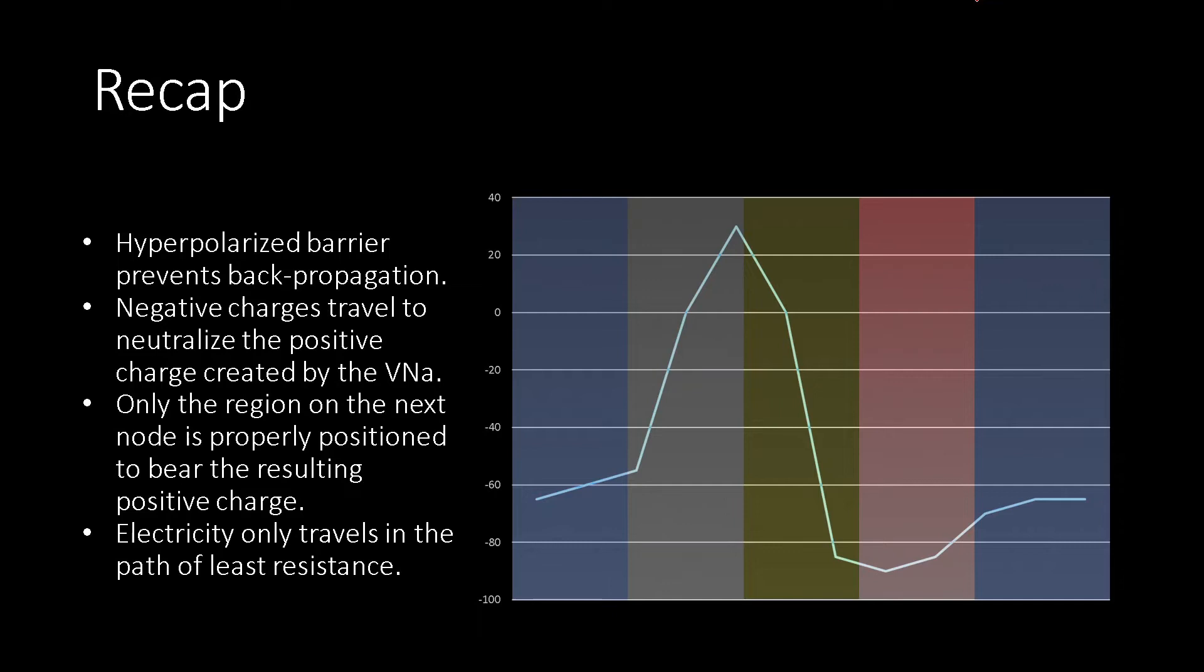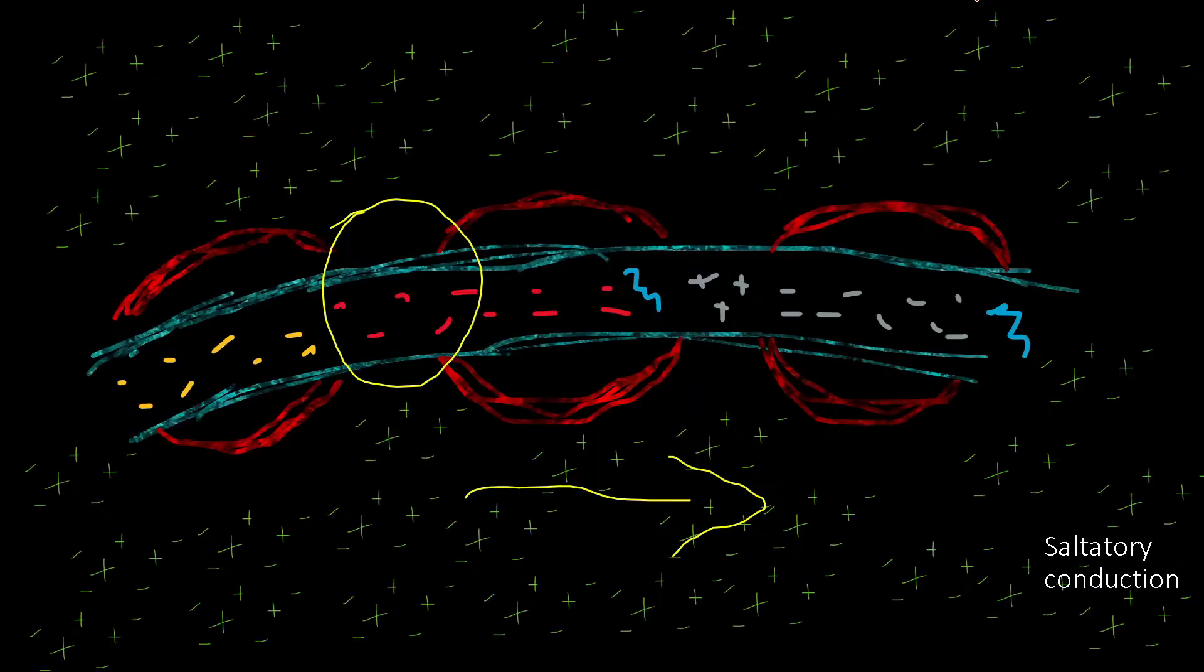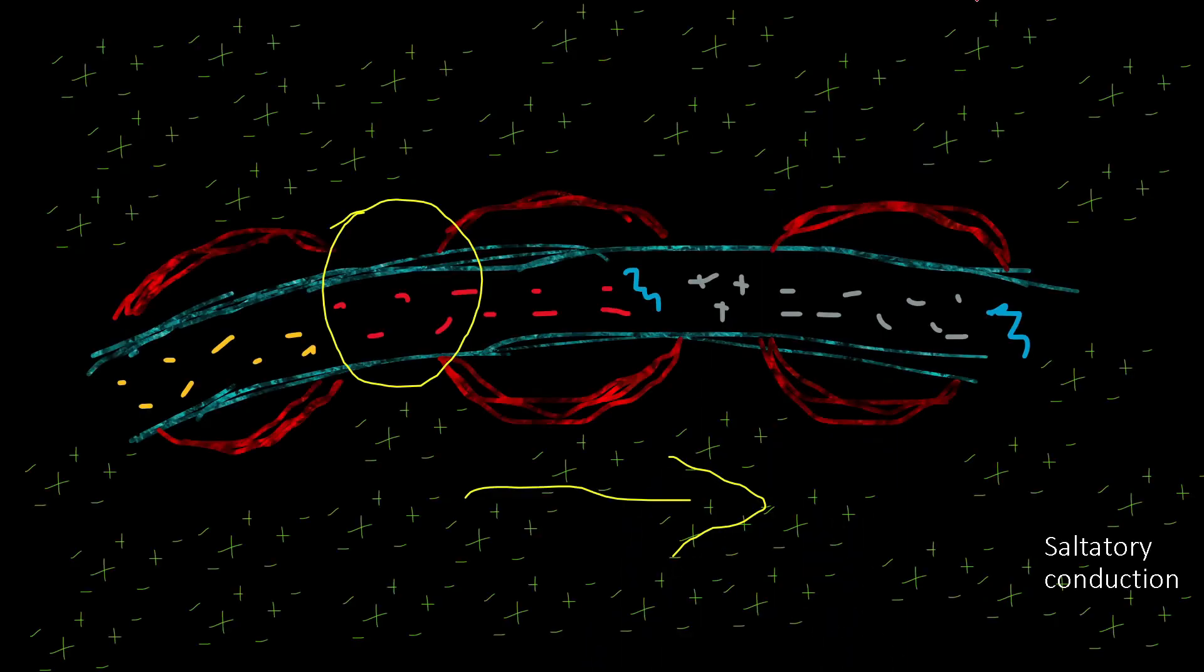So that's a lot to consider, but pretty much electricity only travels in a path of least resistance. It's literally like lightning. There's no reason for the action potential to travel left, it's being blocked off, and it's being insulated from the high resistance of the extracellular fluid because of the myelin sheets.